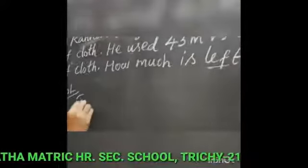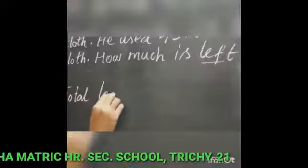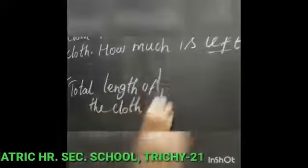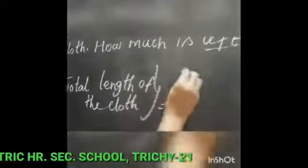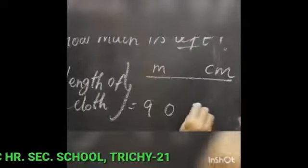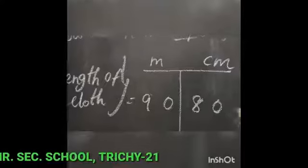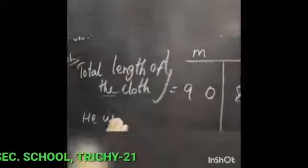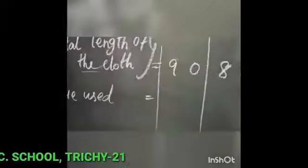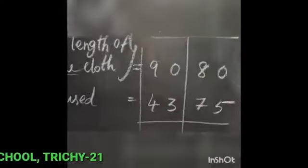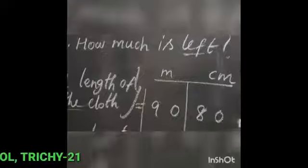So you must write the steps. What is the total length of the cloth? Write: total length of the cloth — separate meter and centimeter — 90 meter and 80 cm. Then, how much he used: 43 meter and 75 cm. So as usual, you subtract the given numbers. Left means balance means subtract.